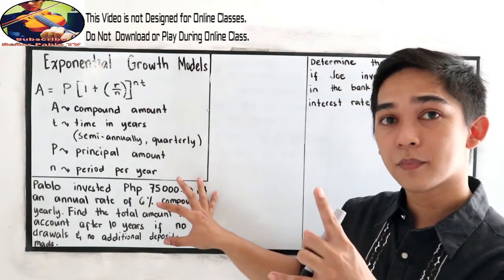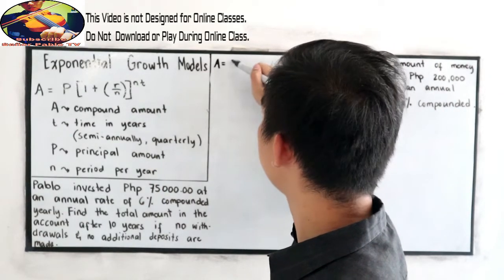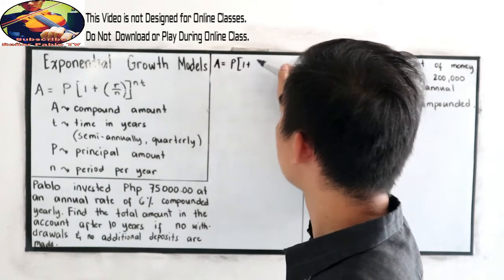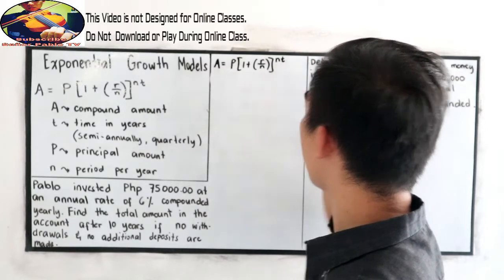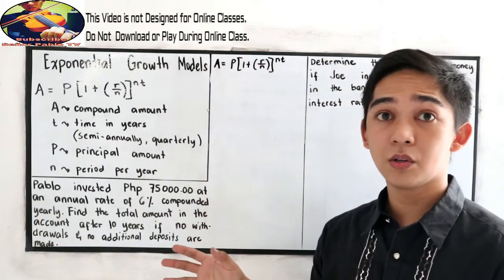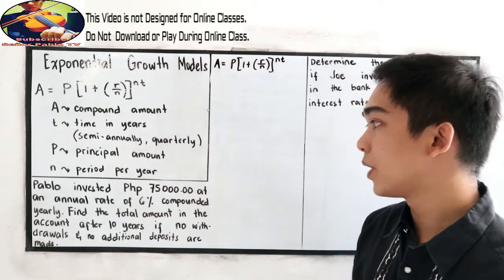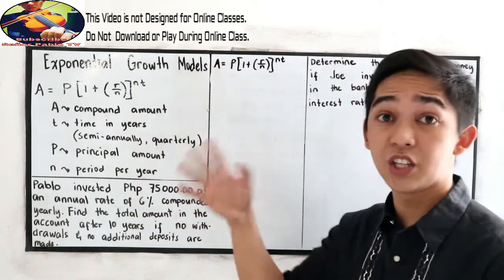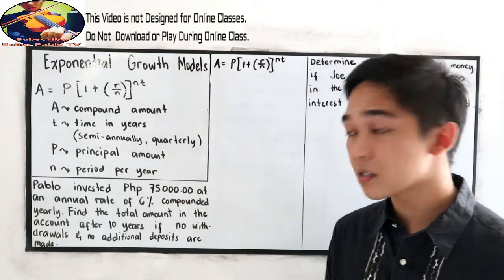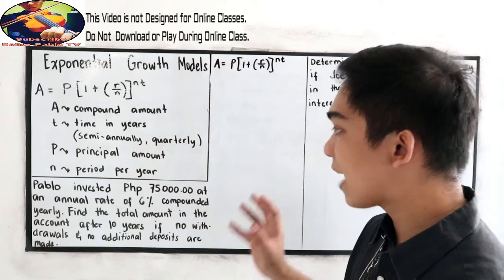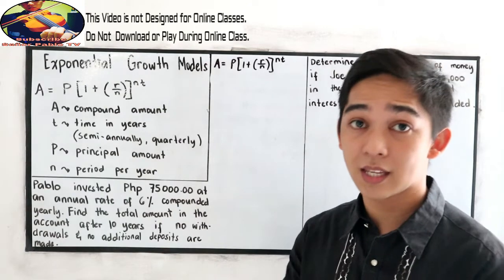First step, we write our formula. So, A is equal to P, 1 plus quantity R over N, raised to N times the time. Pablo invested or deposited $75,000 in his bank account with annual rate of 6% compounded yearly. We're going to find the total amount after 10 years if he does not deposit or withdraw in that duration of time.